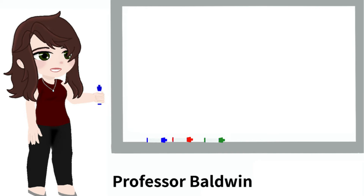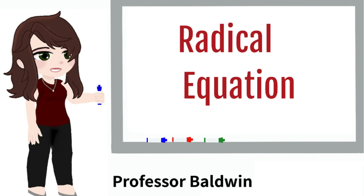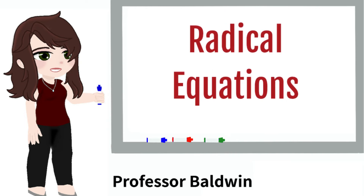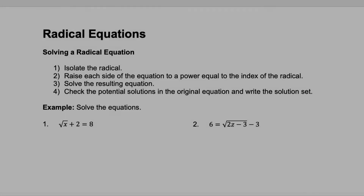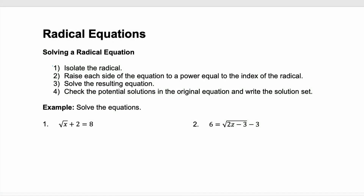Hi, I'm Professor Baldwin, and today I'm going to teach you how to solve radical equations. There are four steps to solving radical equations. Step one, very important, you have to isolate the radical. You can't solve a radical equation until you have isolated the radical on one side of the equal sign. It has to be by itself.